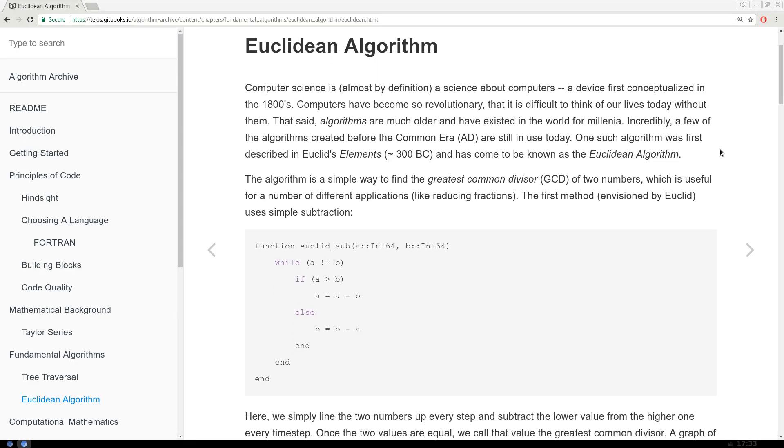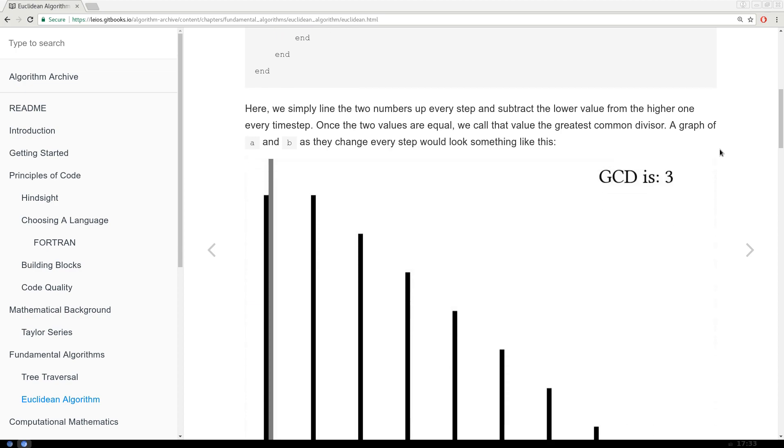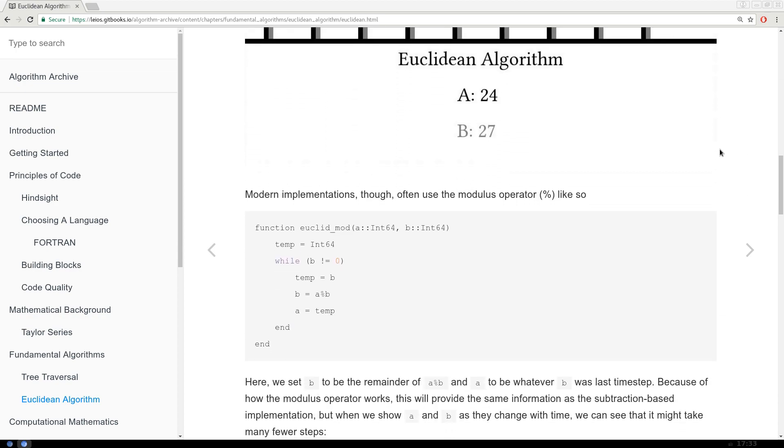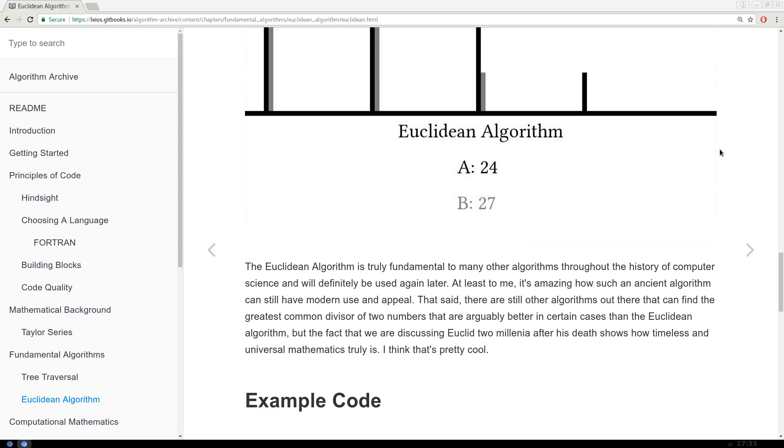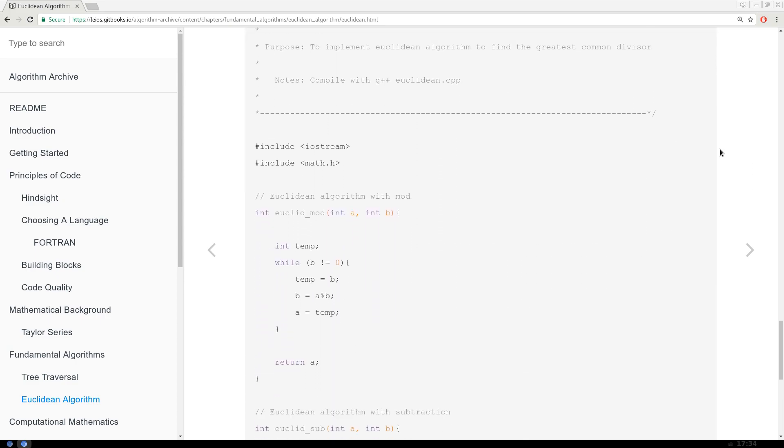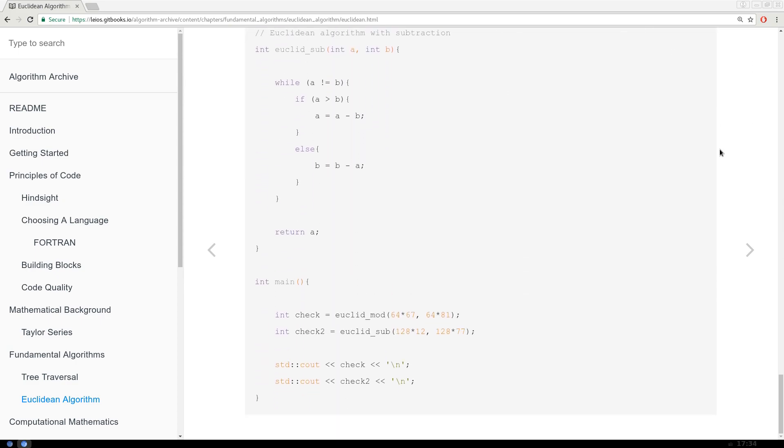Like before, the chapter is up on the Arcane Algorithm Archive right now and is awaiting language-specific implementation. I'd be incredibly grateful if you would implement the Euclidean algorithm in your favorite language and send it to me via pull request, twitter, or even in the comment section below.